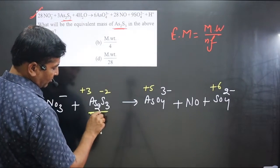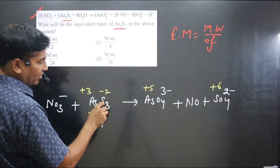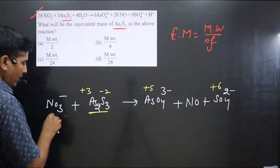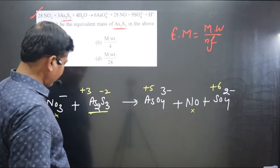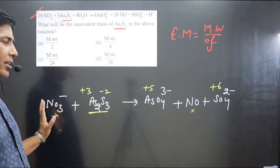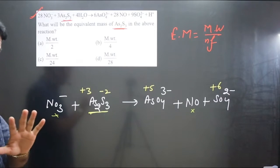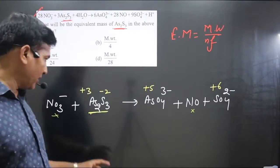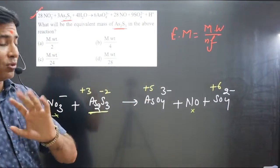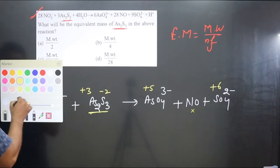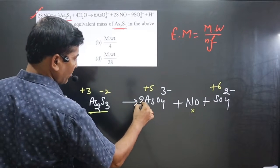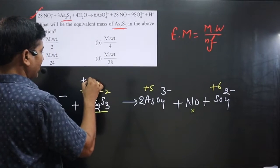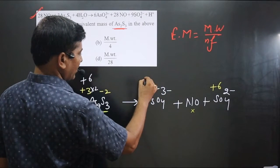Since we are calculating the n-factor for H₃AsO₃, the elements present are arsenic and sulfur, so we calculate the difference in oxidation number for both arsenic and sulfur only — not nitrogen. Always balance the number of atoms before balancing the charge. On the left there are 2 arsenic atoms but only 1 on the right, so multiply by 2. Then 1 arsenic at +3 gives 2 arsenic at +6 total; 1 arsenic at +5 gives 2 arsenic at +10 total.